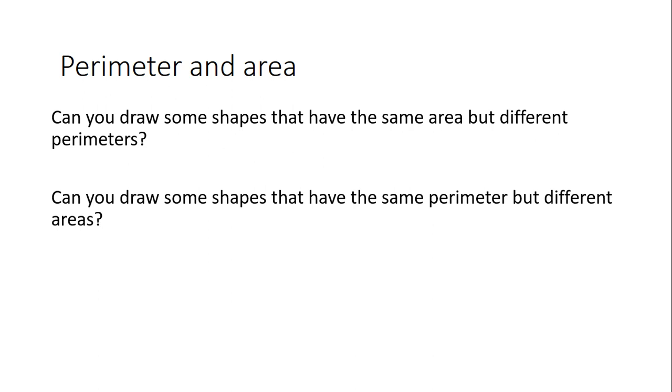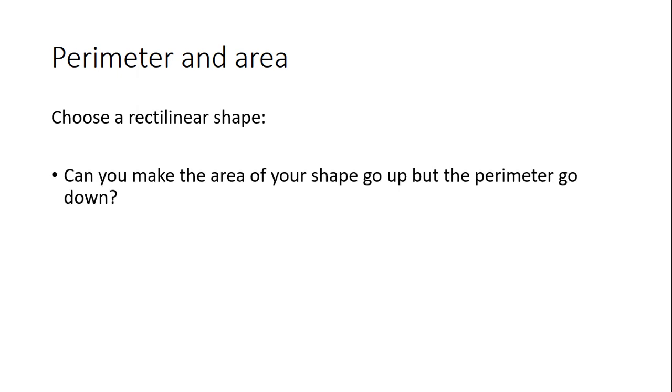For the next set of questions, I'd like you to choose a rectilinear shape. It's probably best if you start with a rectangle or a square if you really want to. What we're asked to do is make the area of your shape go up but the perimeter go down. Is it possible? Can you do that? Take a bit of time, draw it out, have a bit of trial and error, see how the patterns start to move, and see if that's actually possible. Then I'd like you to do the opposite. Back to your original shape—can you make the perimeter of your shape go up this time but the area go down? Is it possible? See how you can do it. Remember those shapes at the beginning with some blocks taken out or things shifted here or there. Is there a possibility to use something like that?